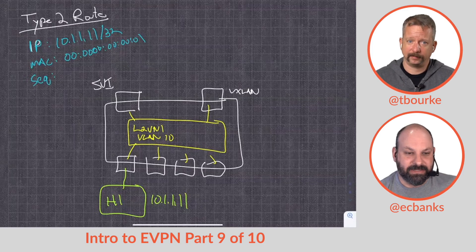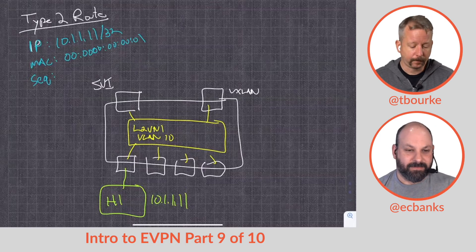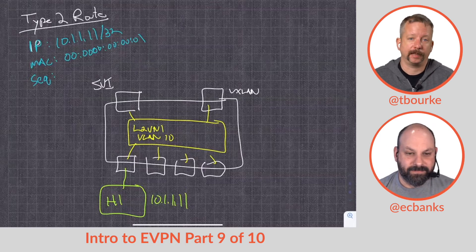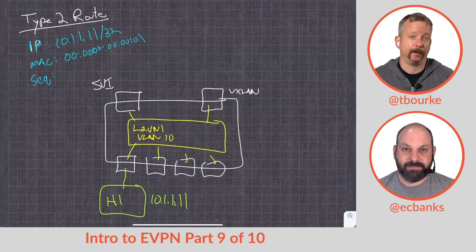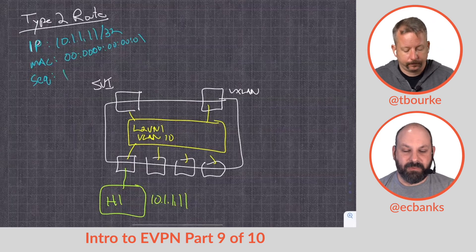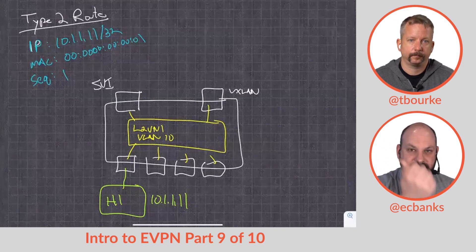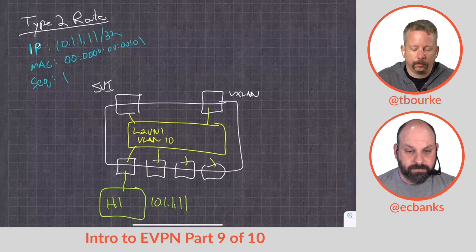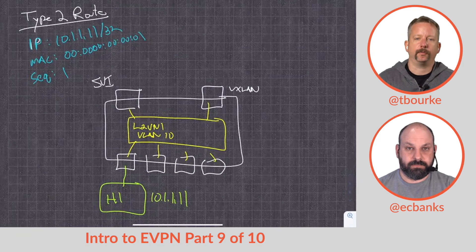The sequence number could be used for anything; it just happens to be leveraged in vMotion environments by advancing the sequence number. It's unclear whether it was added specifically for data center use or was already there, but it was needed for vMotion. During a vMotion event, the endpoint lives in a couple of different places and we need to know it's actively being moved.